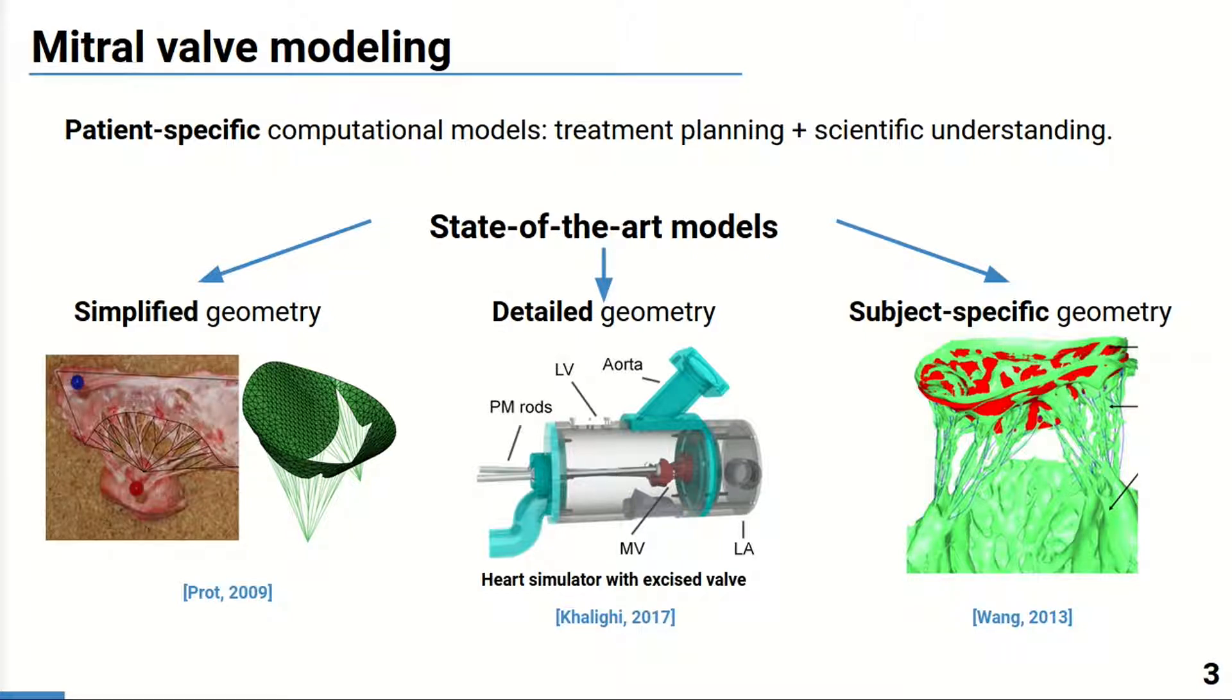In the state-of-the-art models, the valve geometry is either simplified, as you can see on the leftmost image, or detailed but obtained in highly controlled environments, or based on subject image data but relies on manual segmentation, being a tedious and time-consuming task. No automatic method for complete geometry extraction was proposed yet, especially few approaches were developed for the chordae.